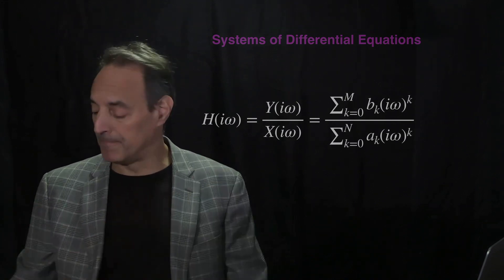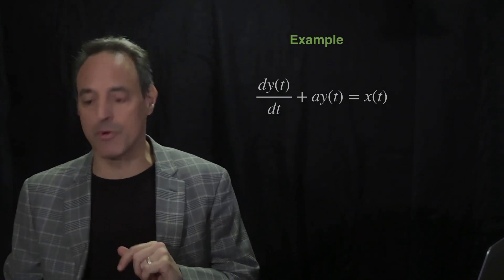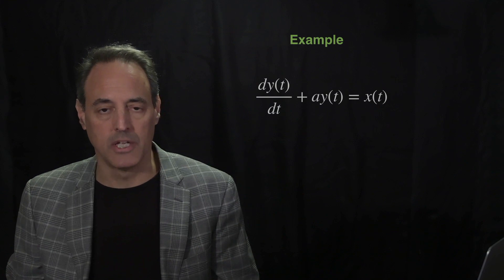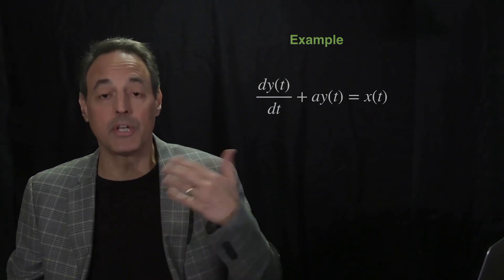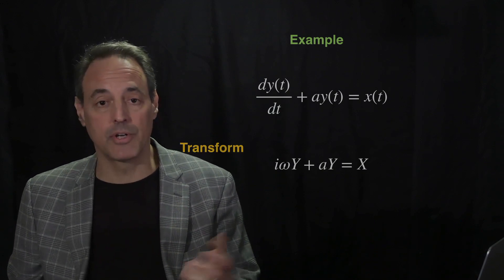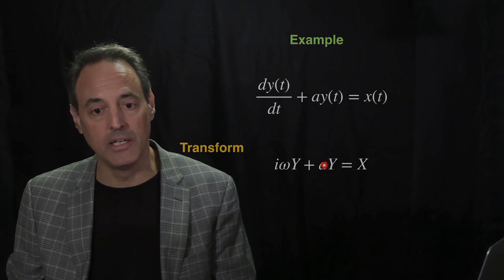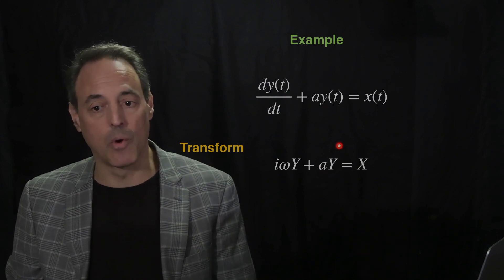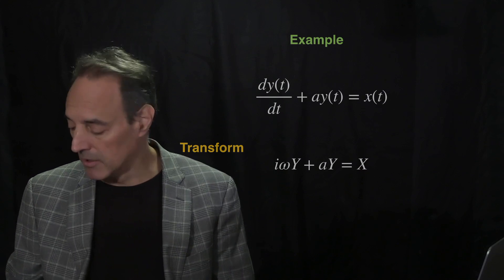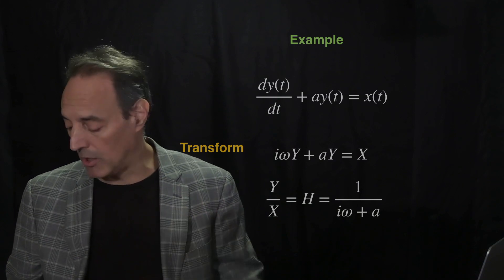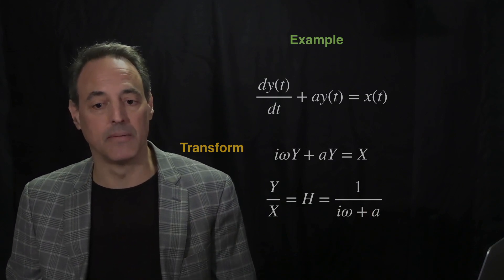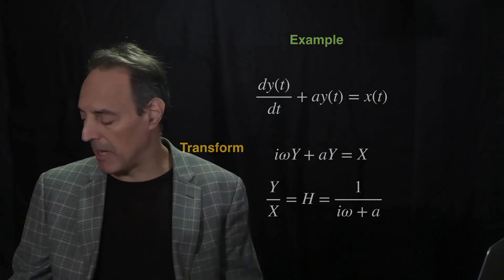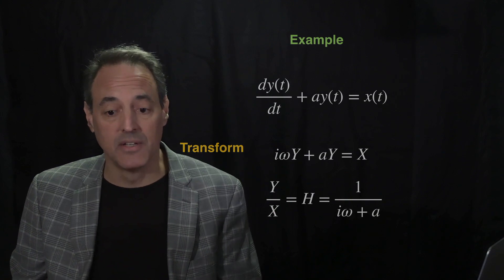Let's consider a simple example: a first order differential equation dy/dt + ay = x(t), where the input is just a time series X(t). We Fourier transform both sides: the left gives iω·Y + a·Y, using the fact that the first derivative drops down an iω and the constant term just gives back a·Y. The right gives the Fourier transform of X. We can then solve for Y over X, which is H in the Fourier domain, and that's simply 1/(iω + a).